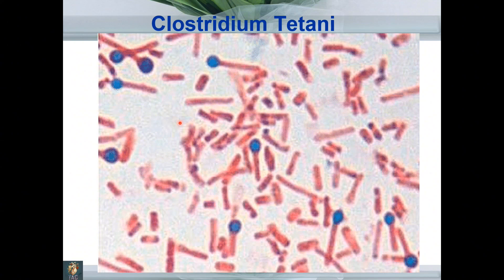This is the diagnostic slide of a very dangerous bacterium — Clostridium tetani, another gram-positive rod. You can appreciate the rod-like structure. You can also appreciate a terminal round swelling, giving it a tennis racket-shaped appearance. This tennis-racket-shaped organism is Clostridium tetani, known to cause the very dangerous and fatal disease tetanus.